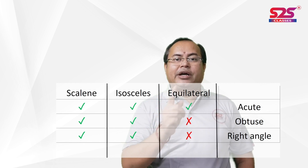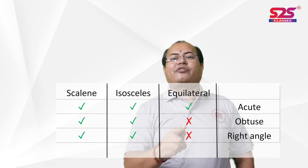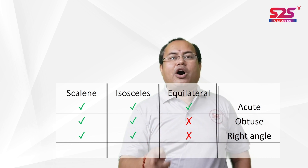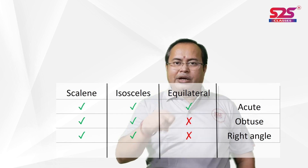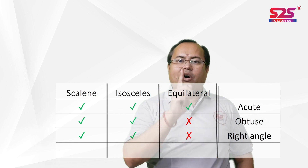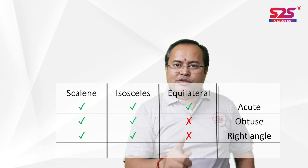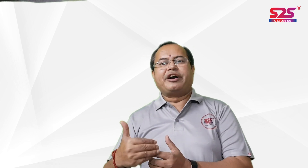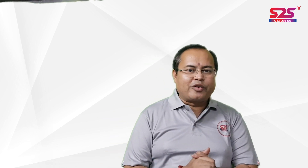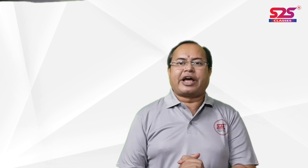But in the case of an equilateral triangle, the angle should only be acute — it is not possible that one angle is obtuse or one angle is right. This is the basic classification of triangles. Details will be covered in the next lecture. You are all requested to subscribe to our S2S Classes channel. Thank you.